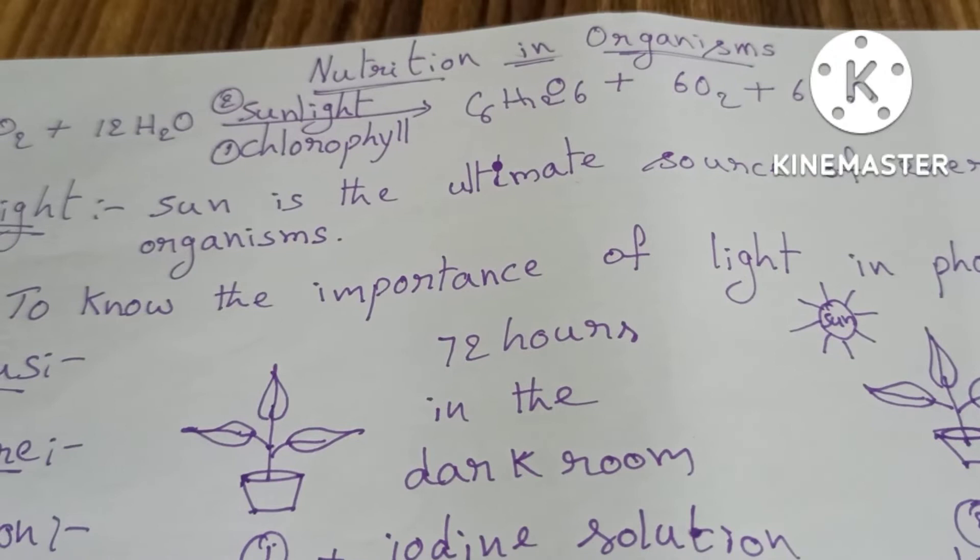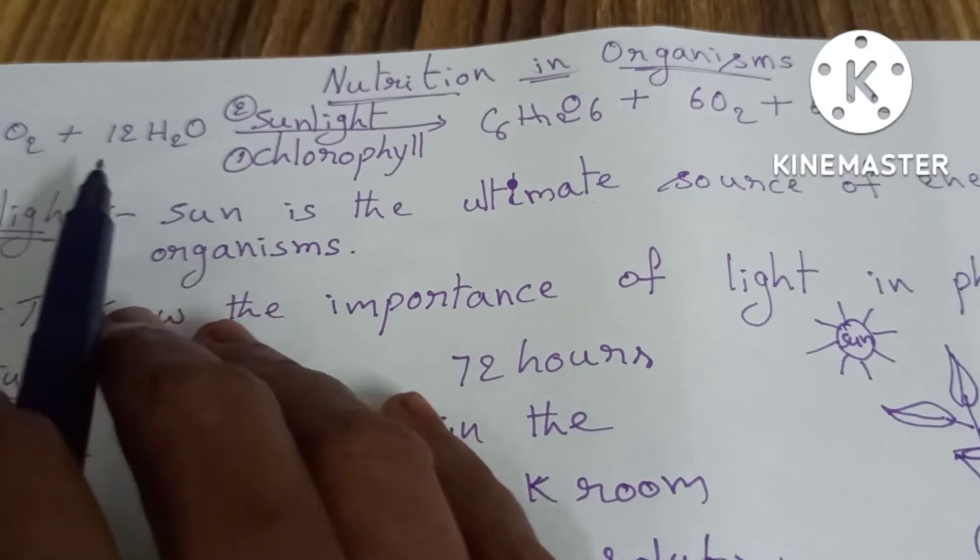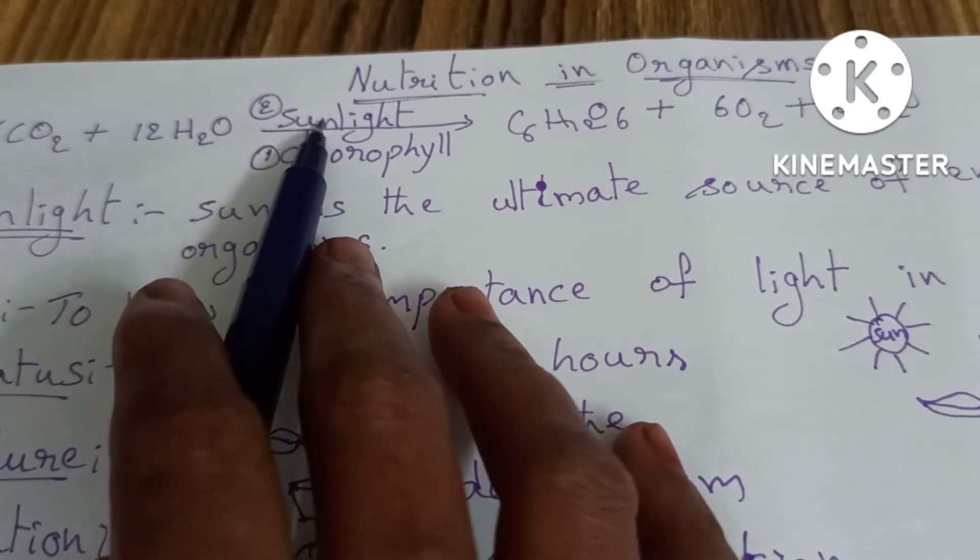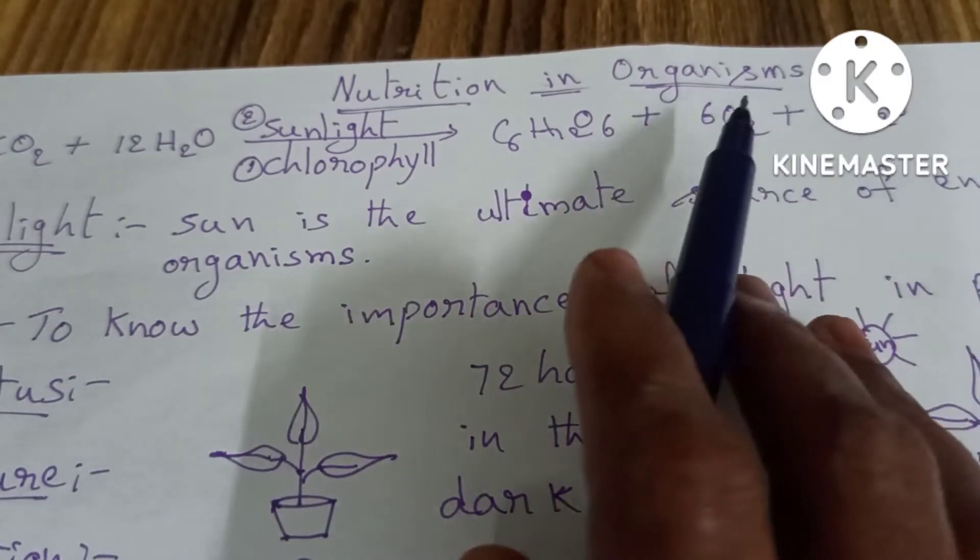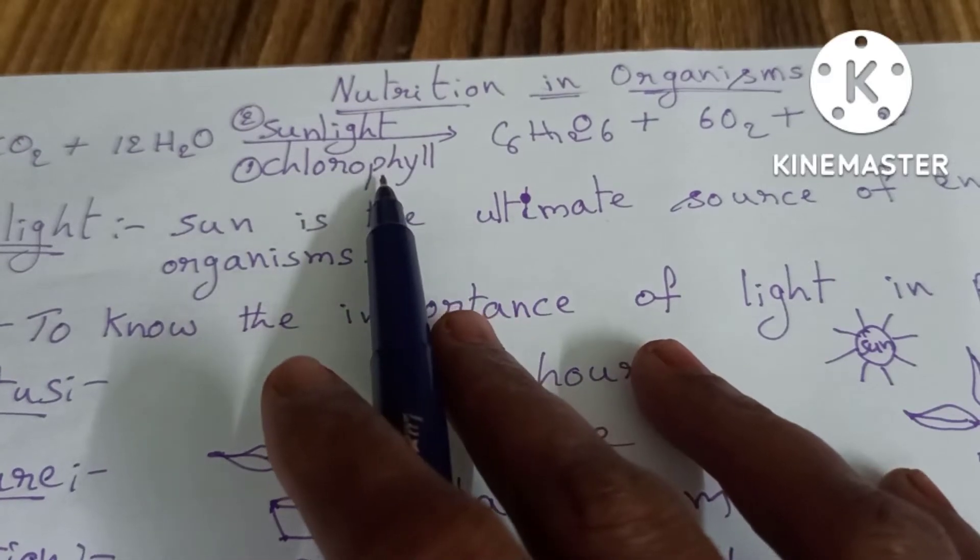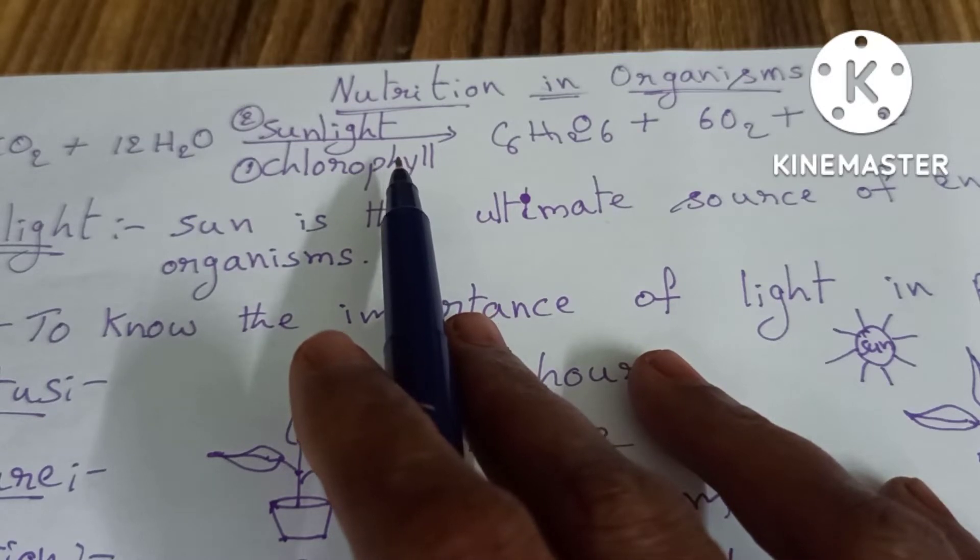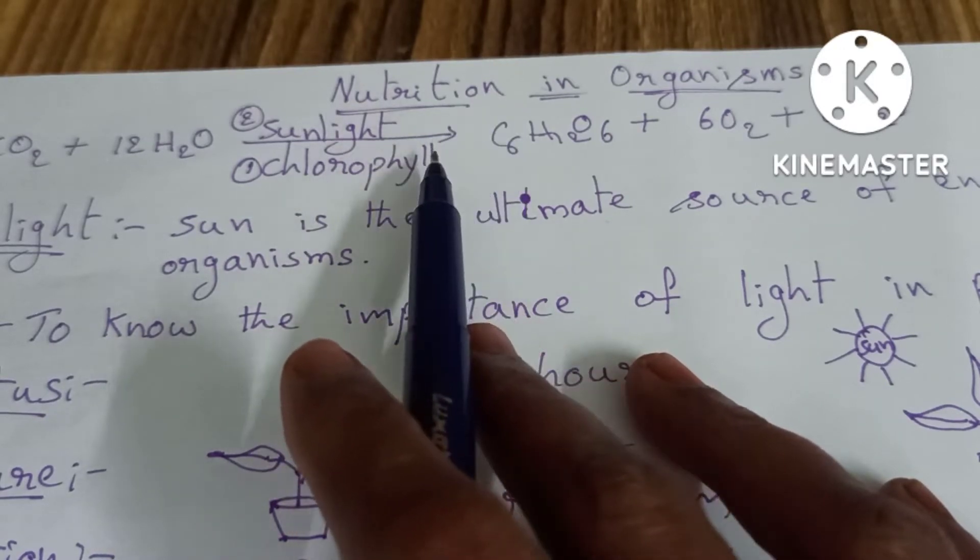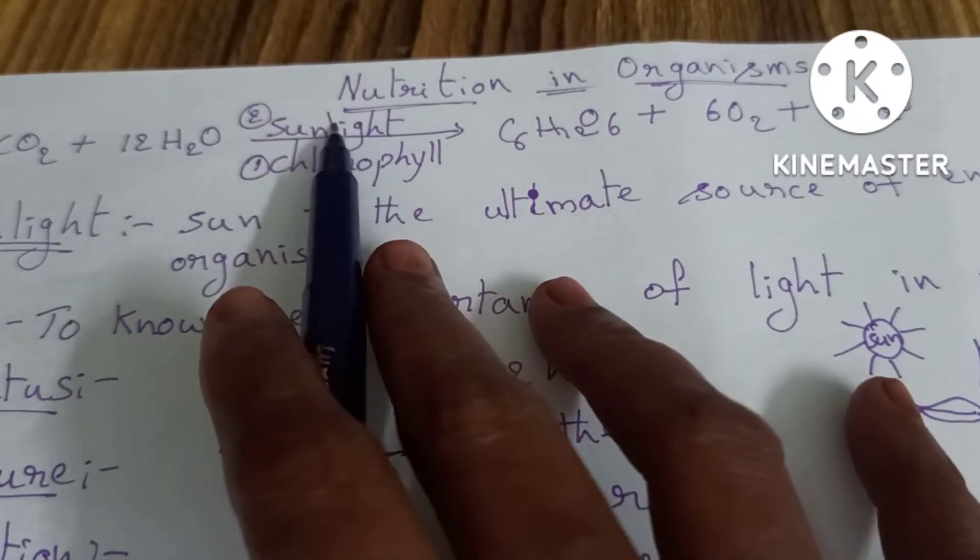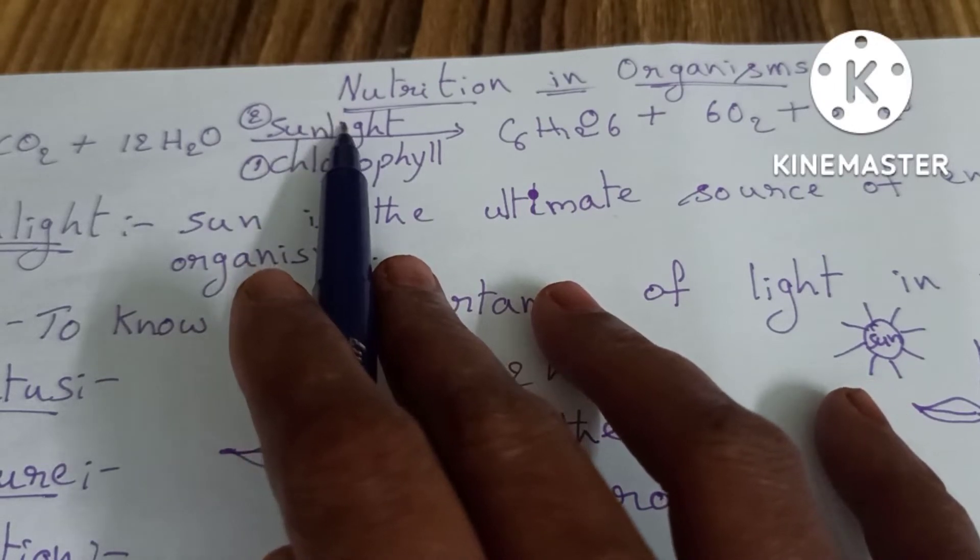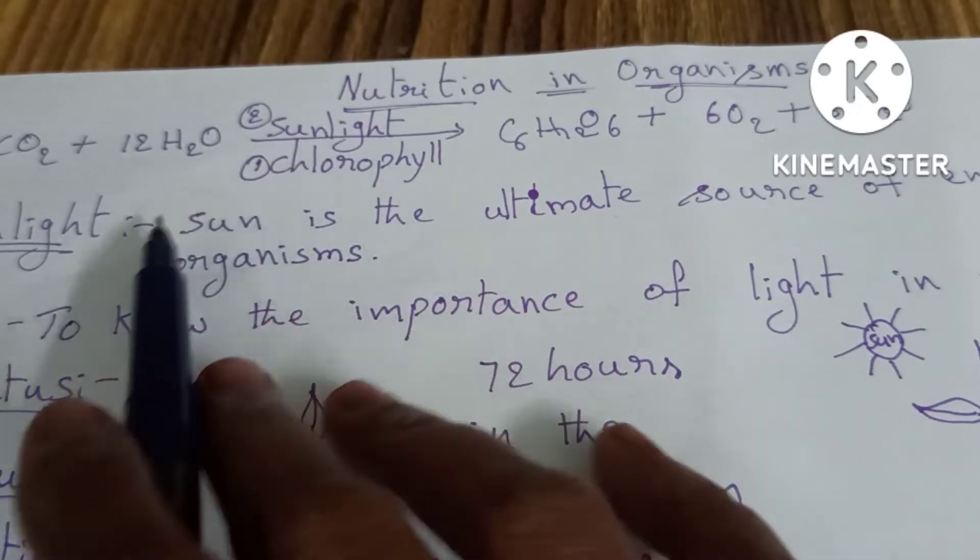Earlier I drew this photosynthesis equation. Carbon dioxide plus water gives rise to glucose, oxygen, and water in the presence of sunlight and chlorophyll. We already did an experiment showing whether chlorophyll is present or absent. Now we'll examine the other component: sunlight is essential for photosynthesis.